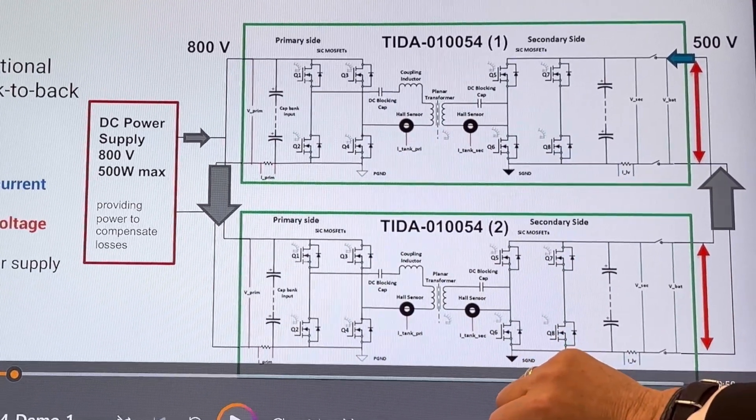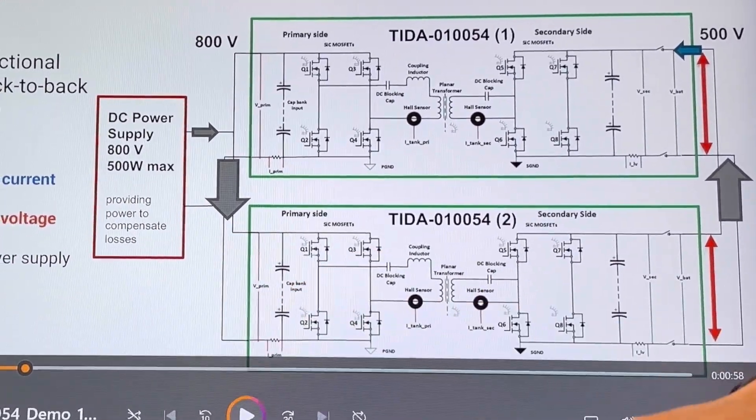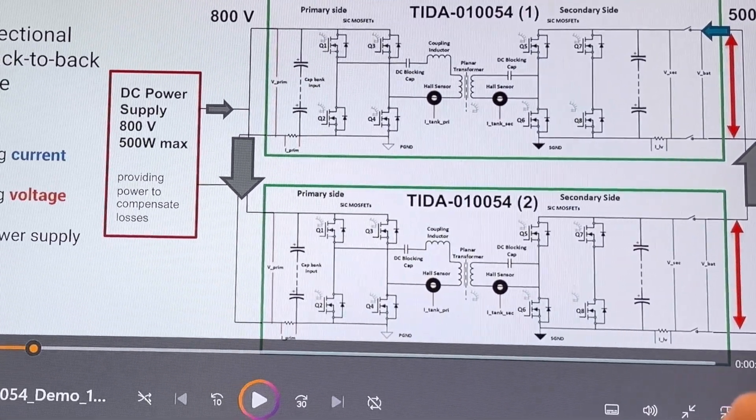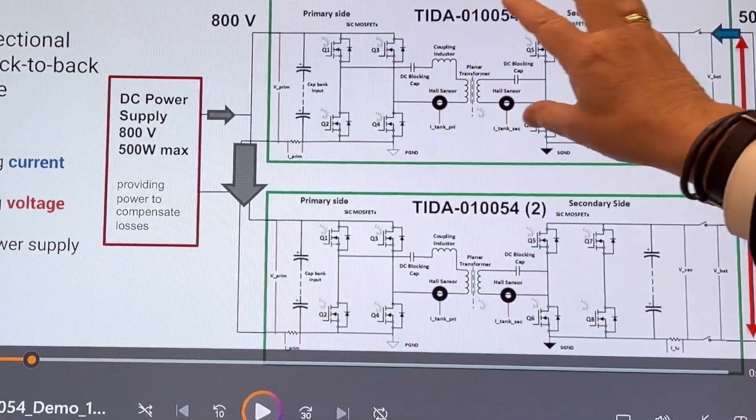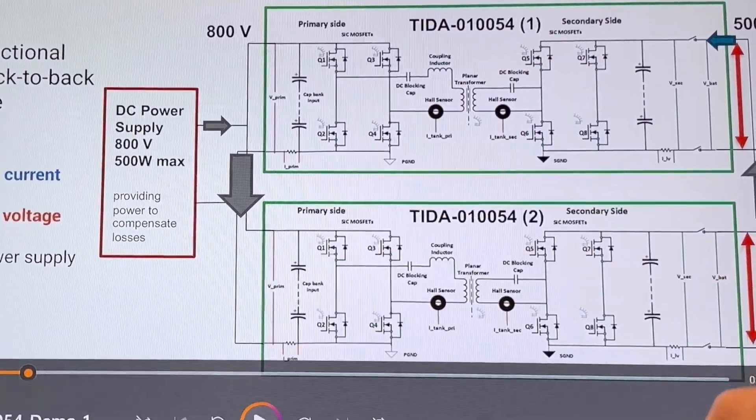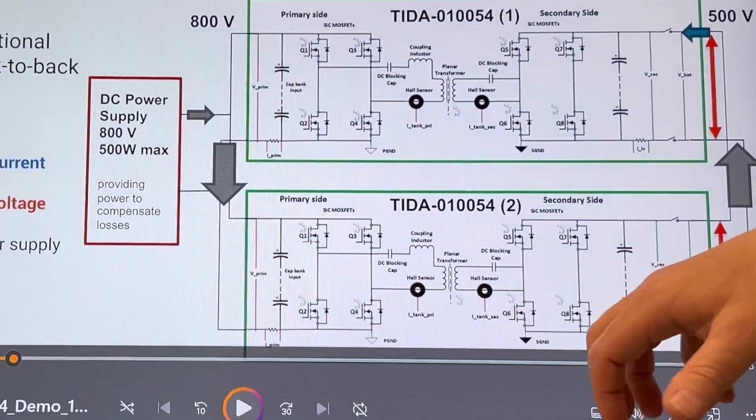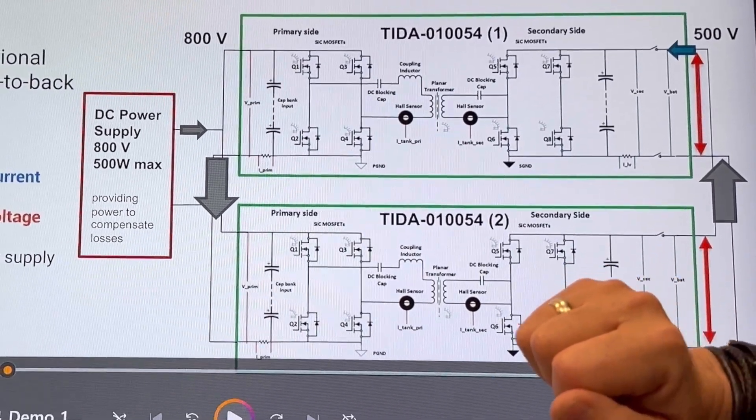There are losses in the system, and these losses are inserted by a power supply that we operate at 800 volt. So all the losses that occur in that system are compensated by the power supply, and with that we can actually show that we can circulate 10 kilowatt.